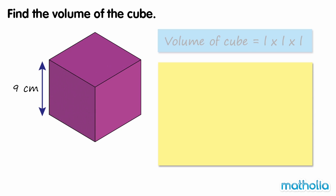Find the volume of the cube. The volume of a cube is given by length times length times length. This cube has a side length of 9 centimeters.